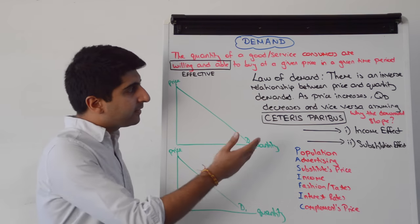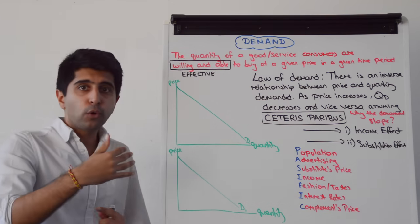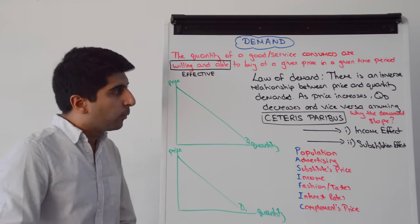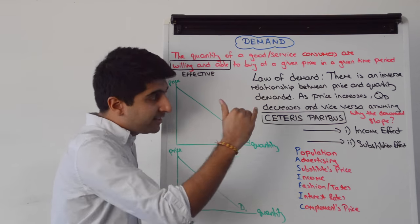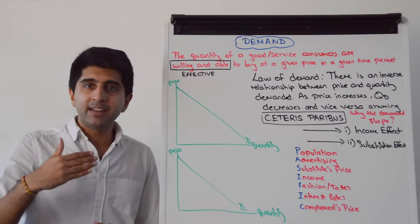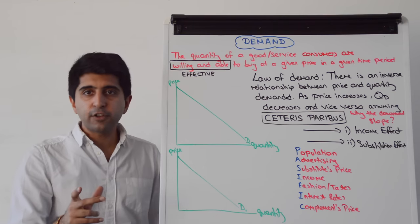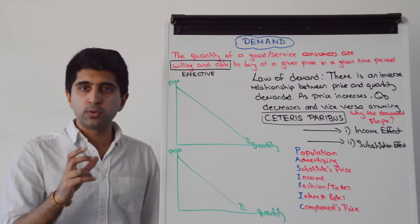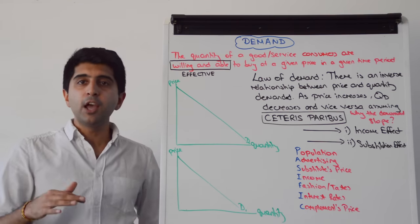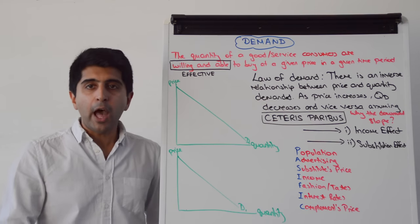The law of demand simply states that there is an inverse relationship between price and quantity demanded. It means that as the price increases, quantity demanded decreases. Whereas if the price decreases, quantity demanded increases. When price goes one way, quantity demanded goes the other way.